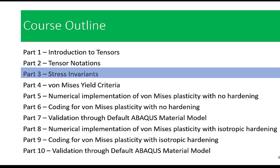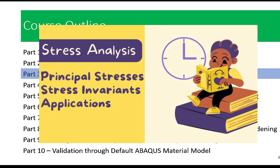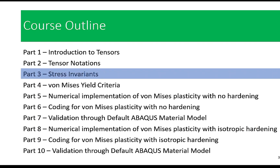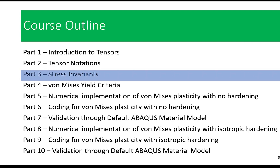Part three is all about stress invariants. We will learn how these invariants can be used to determine the state of stress within a material. Understanding stress invariants is crucial in predicting material failure and ensuring structural integrity.